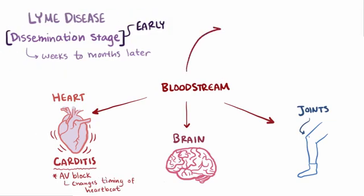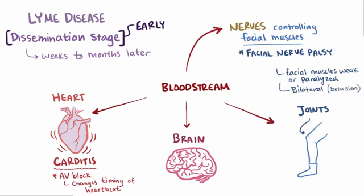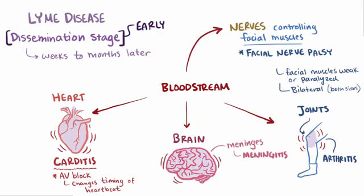Lyme disease is also known to cause swelling around the nerves that control the facial muscles, essentially pinching the nerve and causing facial nerve palsy, where facial muscles become weak or even paralyzed, making it hard to smile or close the eye. With Lyme disease, this condition is often bilateral, meaning it happens on both sides of the face. If the disease spreads to the joints, it can cause arthritis in the knee, the wrist, and the ankles. Lyme disease can also spread to the meninges, the lining of the brain, causing meningitis and sometimes terrible neck stiffness and headaches. Inflammation in various parts of the body can also cause fevers, fatigue, and other flu-like symptoms.